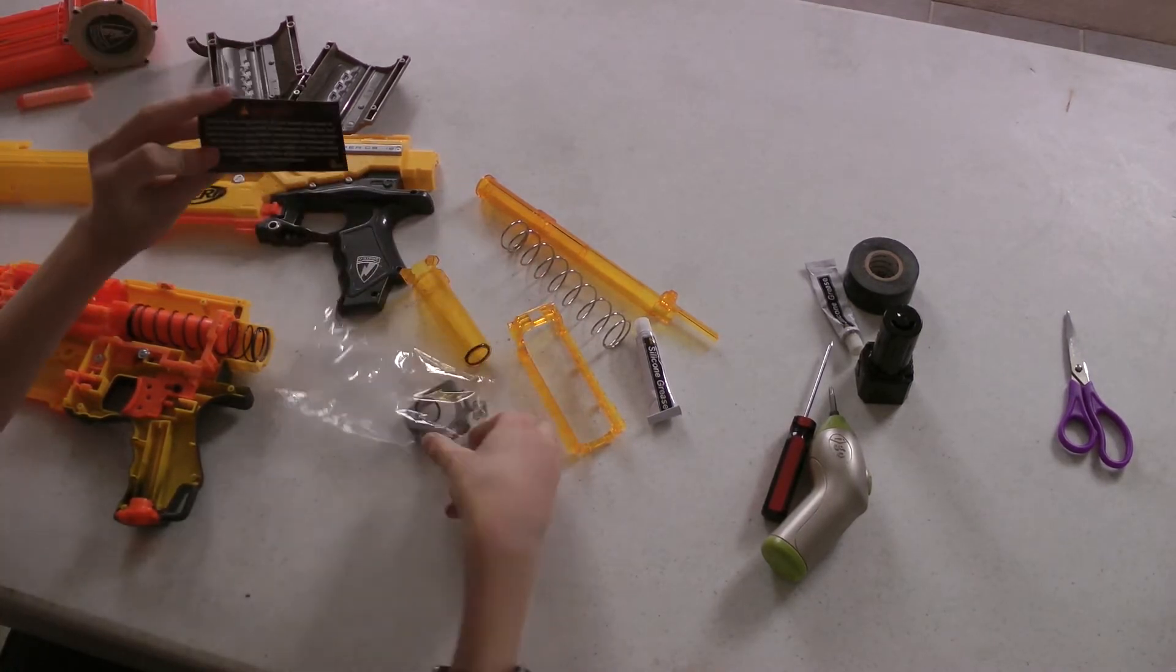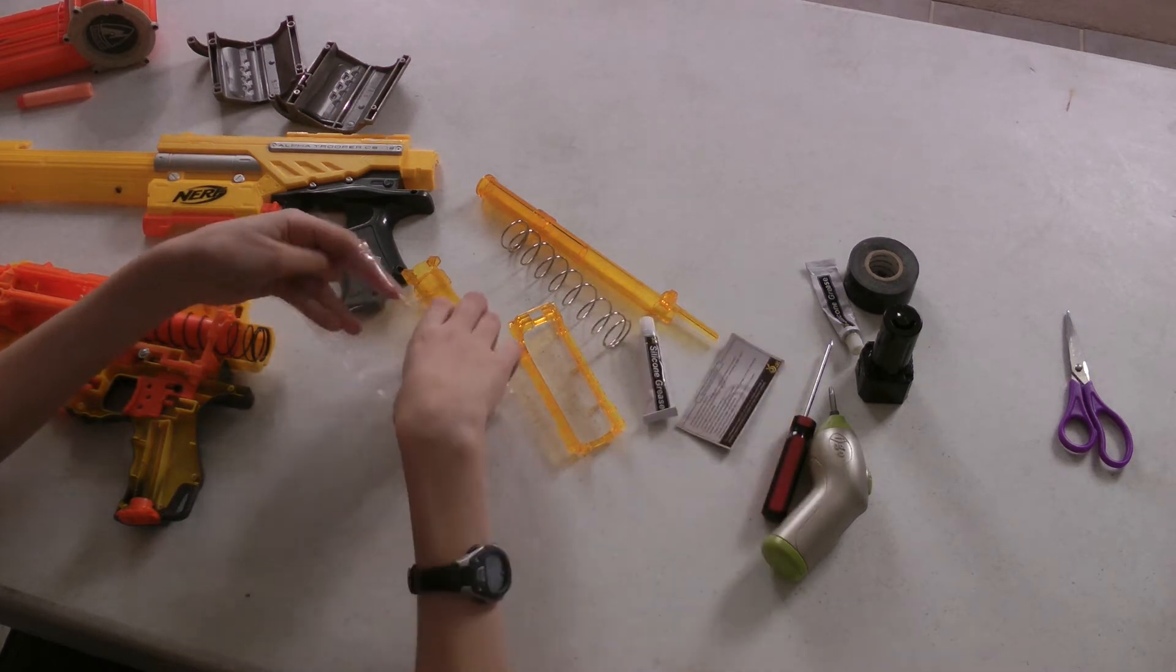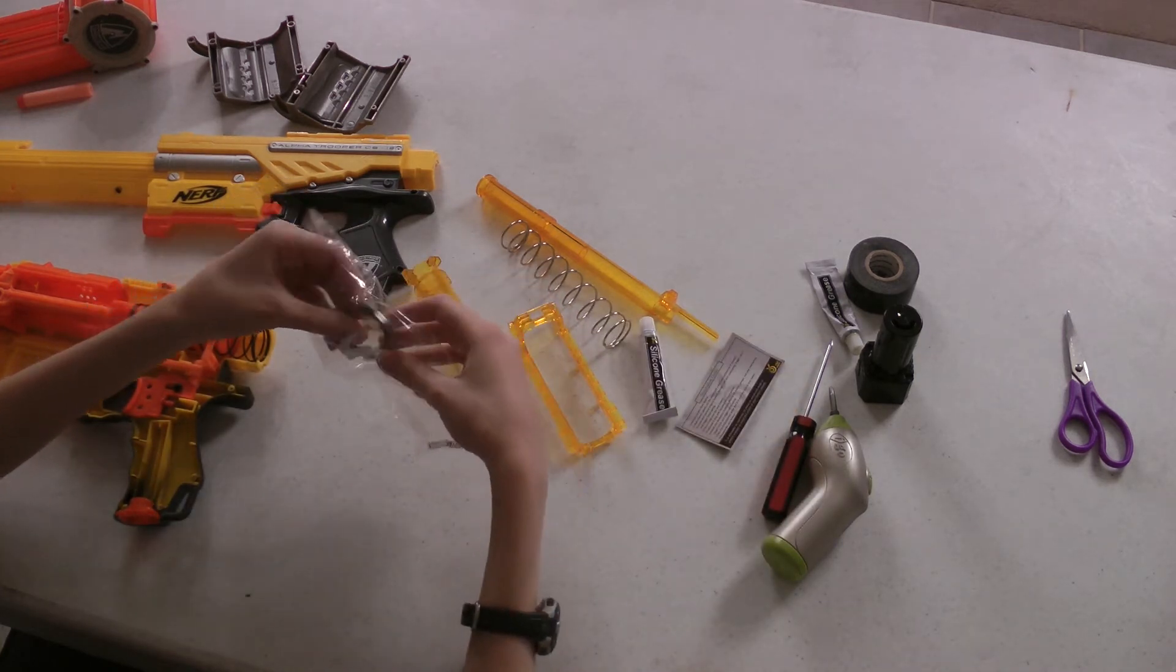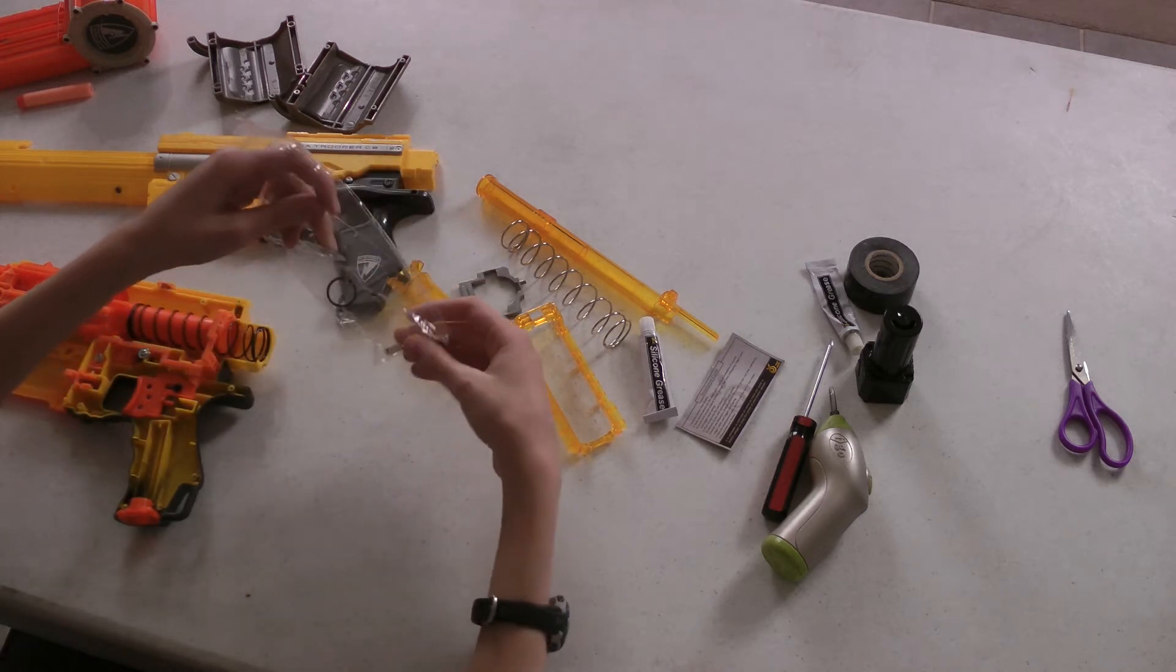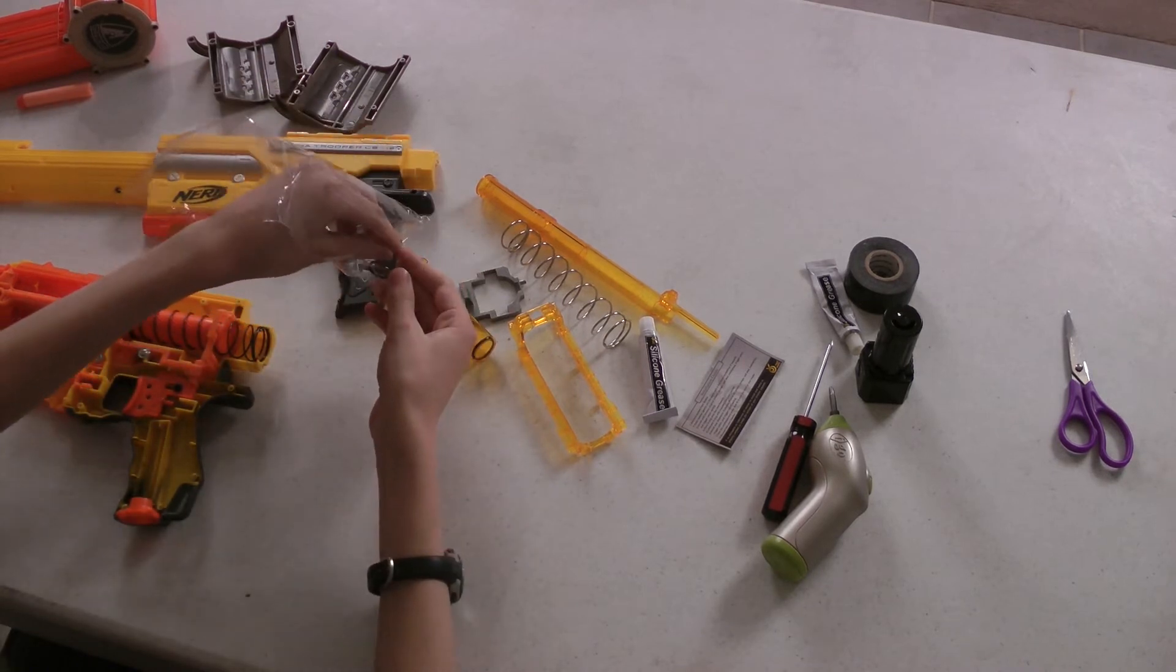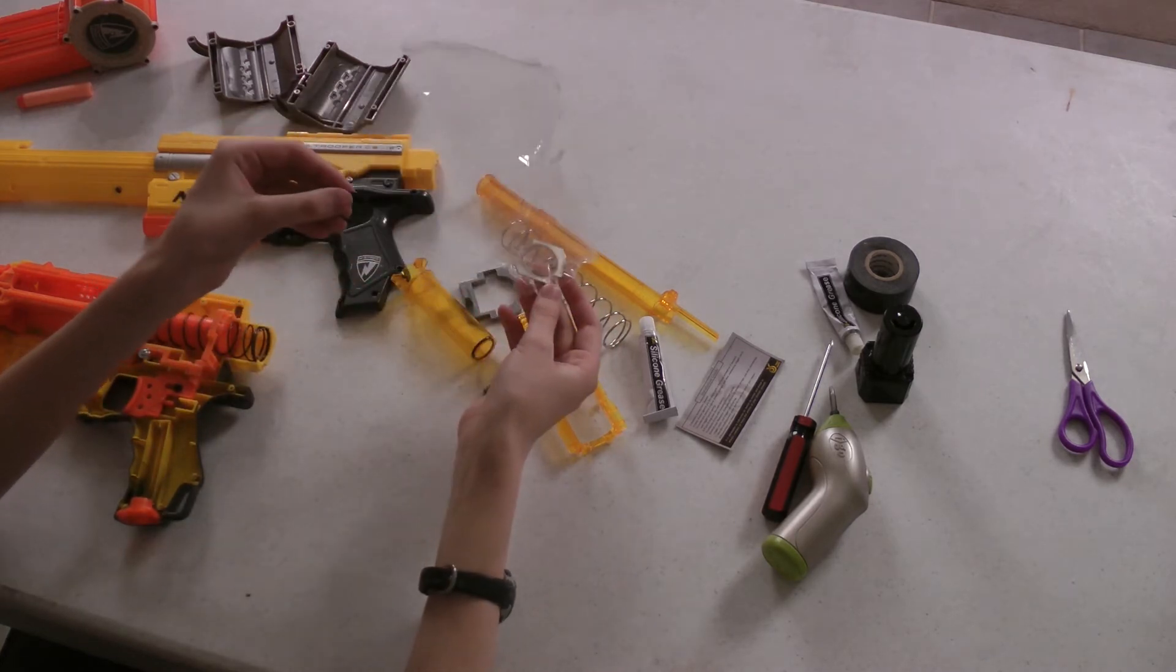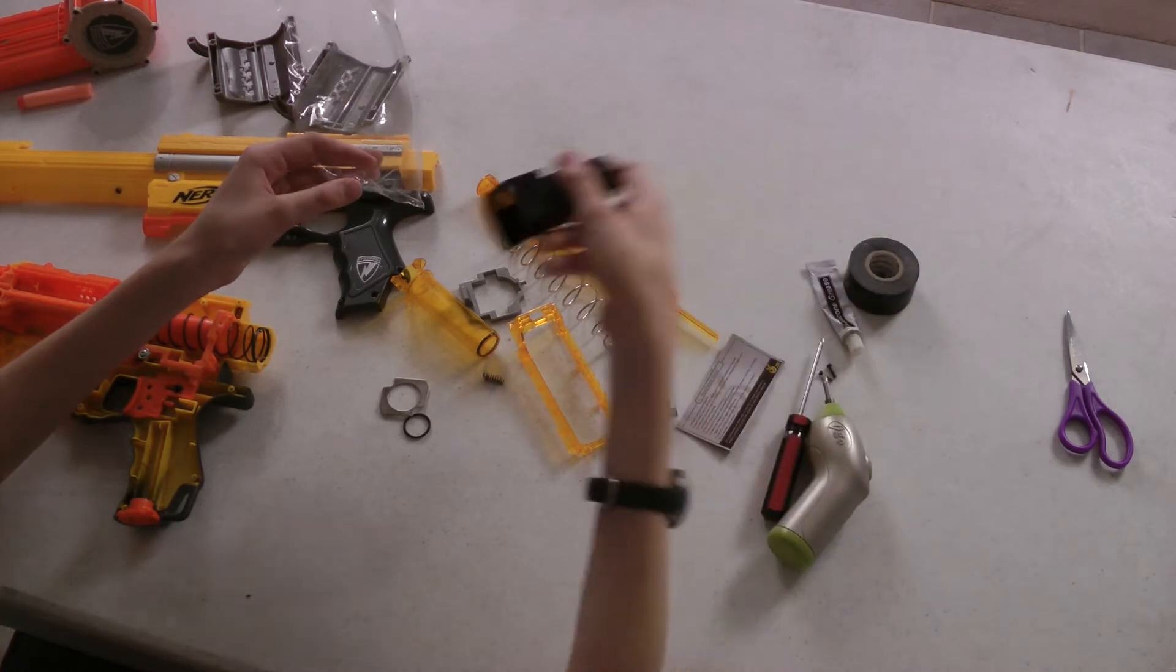It gives you a manual, which is pretty helpful. The catch. Two catch springs. An o-ring. And the reinforcement plate for this piece right here.